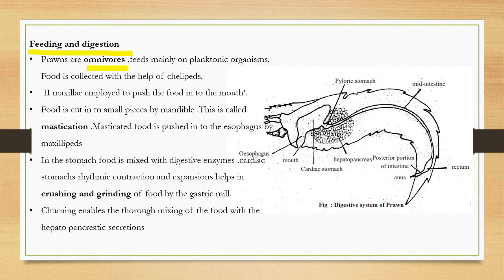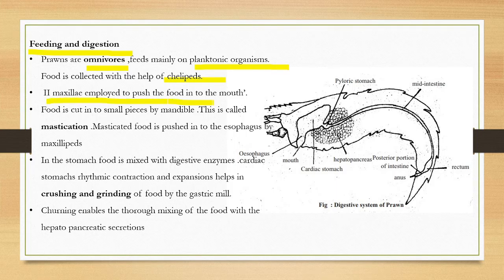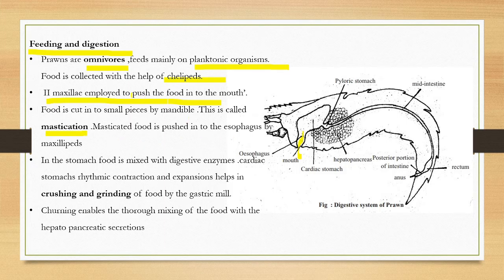Penaeus is an omnivore, feeding mainly on planktonic organisms such as phytoplankton. Food is collected with the help of setae. The second maxilla is employed to push the food into the mouth. Food is cut into small pieces by the mandibles in a process called mastication, and the masticated food is pushed into the esophagus by the maxillipeds.